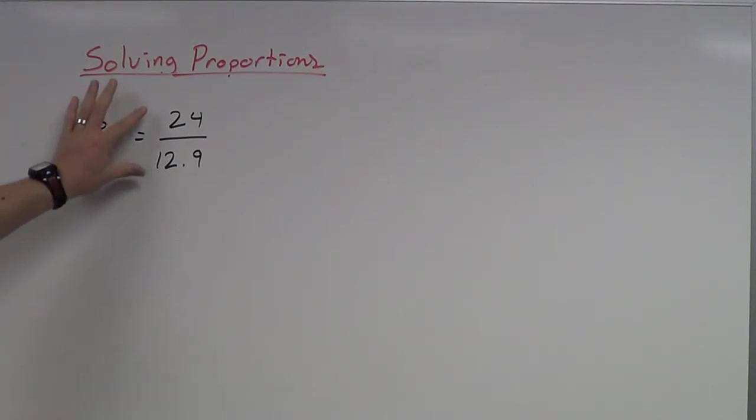16 over p is a ratio. 24 over 12.9 is also a ratio. Ratio is just another name for fraction.